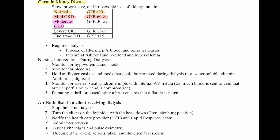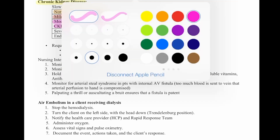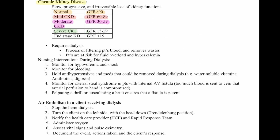Moderate chronic kidney disease has a GFR of 30 to 59. Severe is 15 to 29. End stage is a GFR less than 15, and this requires dialysis, which is the process of filtering the patient's blood and removing wastes.